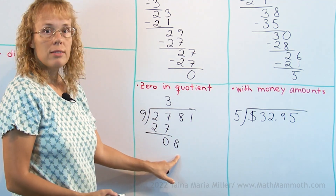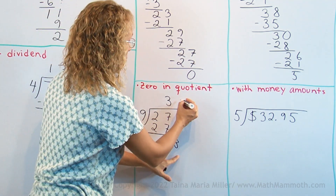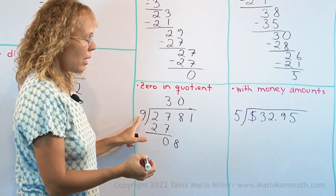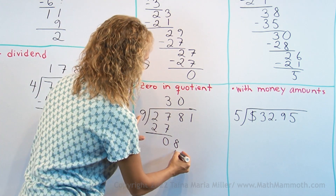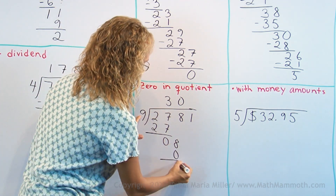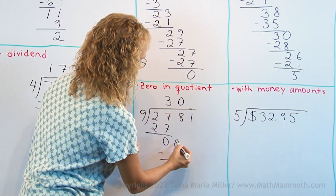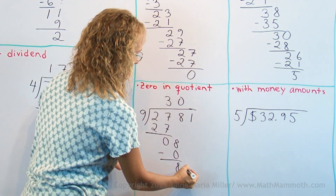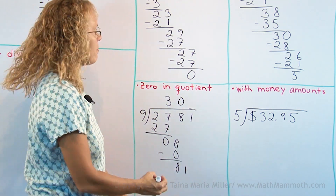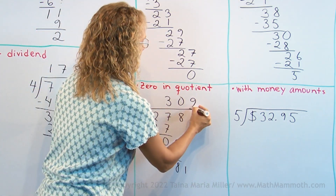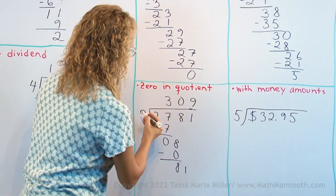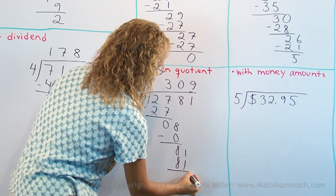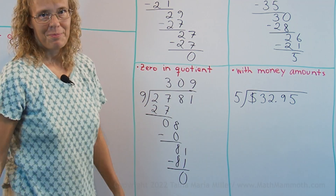9 goes into 8 zero times, so you put 0 here. 0 times 9 — just multiply as usual — is 0. Subtract 8, drop down 1. 9 goes into 81 nine times, and 9 times 9 is 81, subtract to get 0.